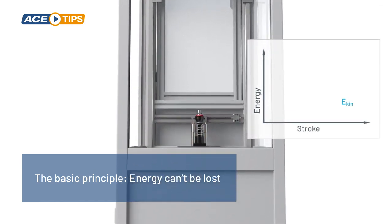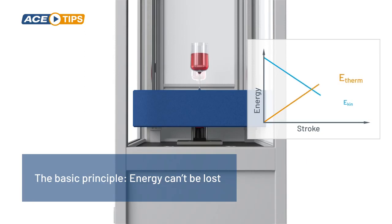An industrial shock absorber converts the kinetic energy of a moving mass via friction into heat energy.